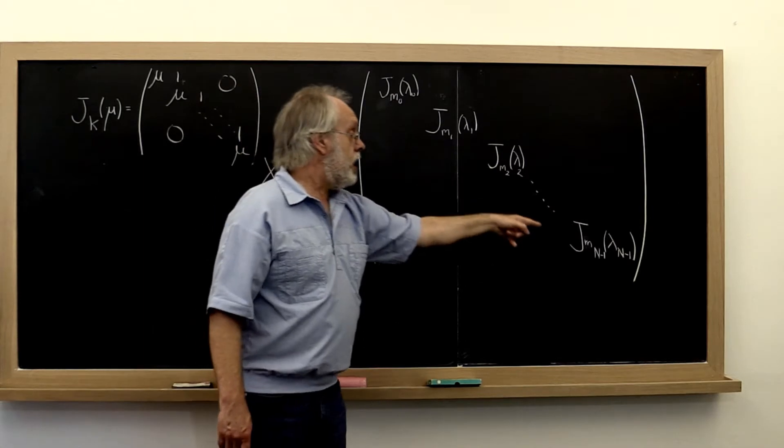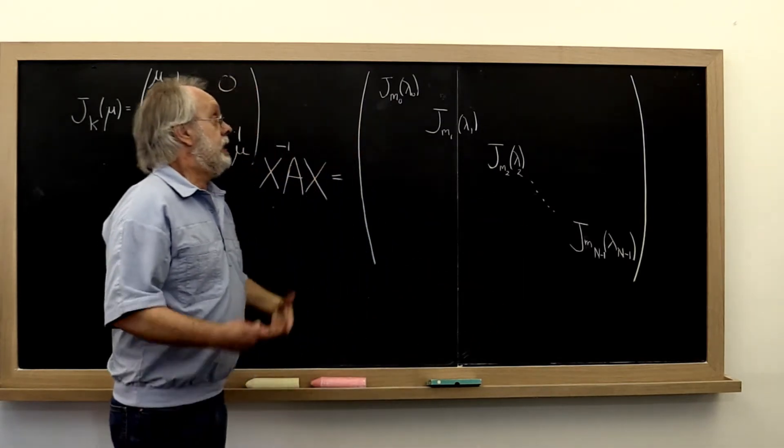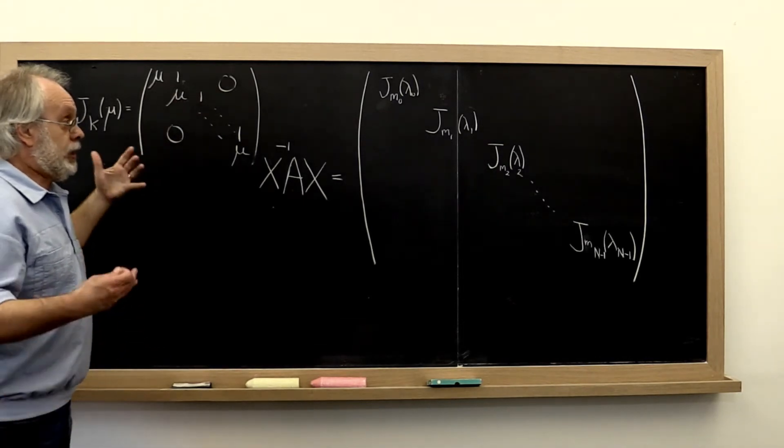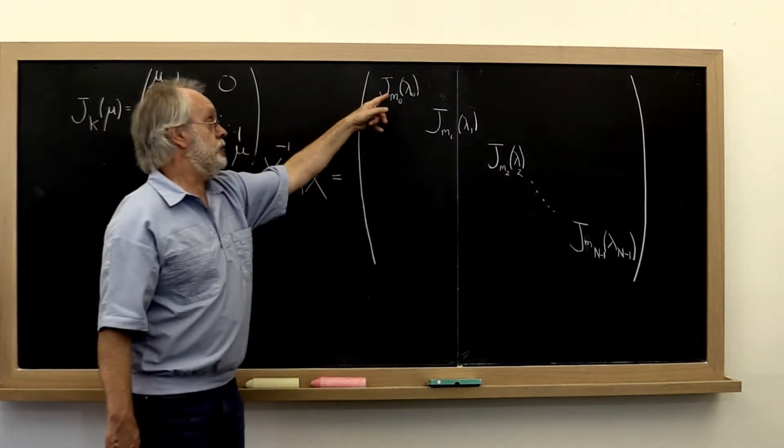Each of these blocks on the diagonal is a Jordan block, so it has this form. It could be a one by one Jordan block.